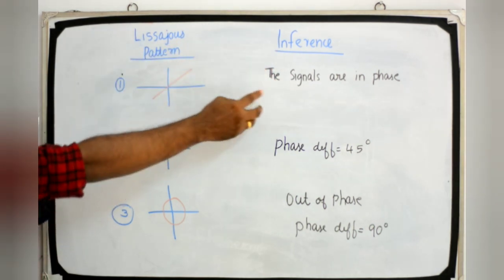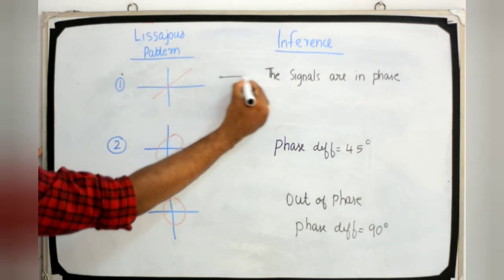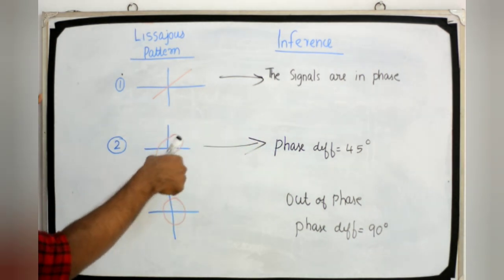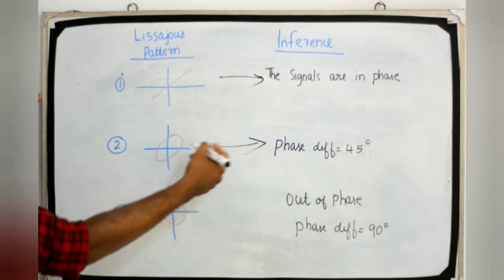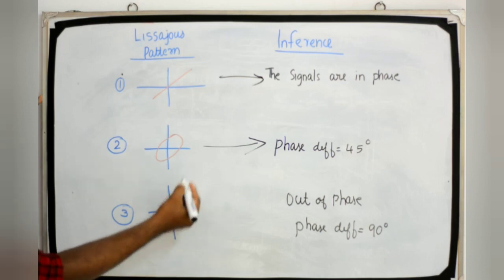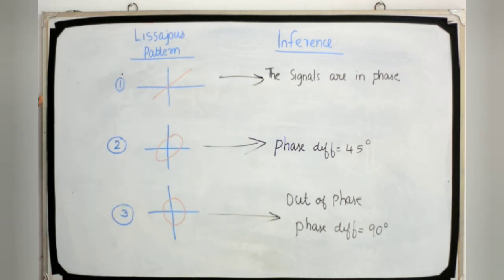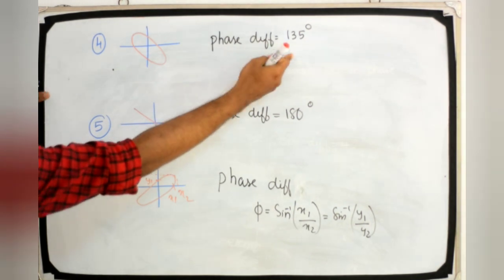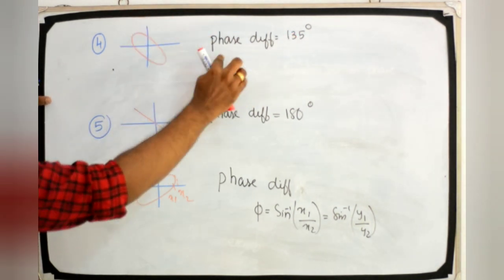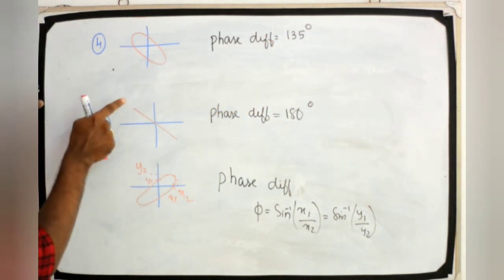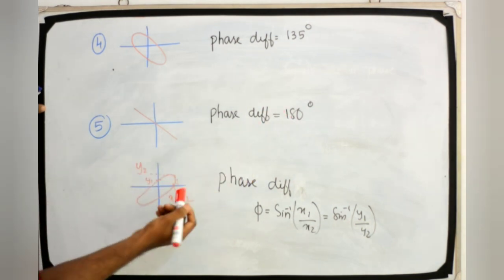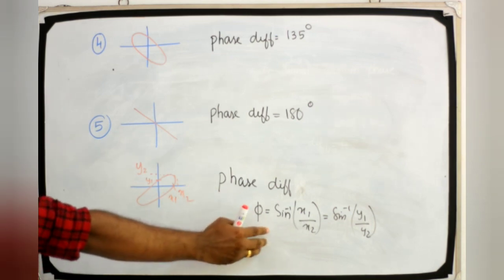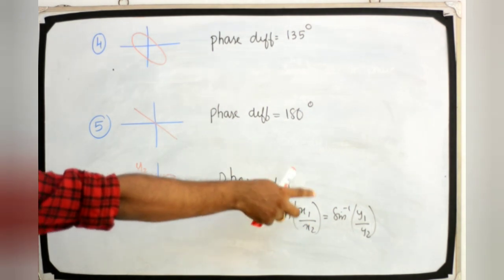The first Lissajous pattern indicates the signals are in phase. The second pattern has a phase difference of 45 degrees. The third pattern is out of phase with a phase difference of 90 degrees. The fourth has a phase difference of 135 degrees, and the fifth has a phase difference of 180 degrees. The phase difference φ = sin⁻¹(x1/x2) = sin⁻¹(y1/y2).